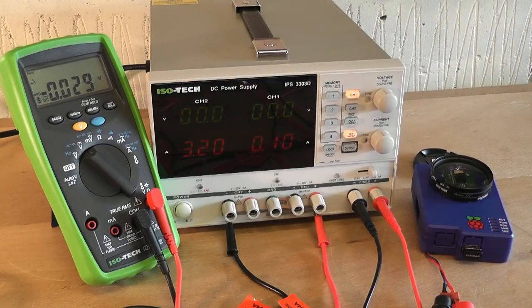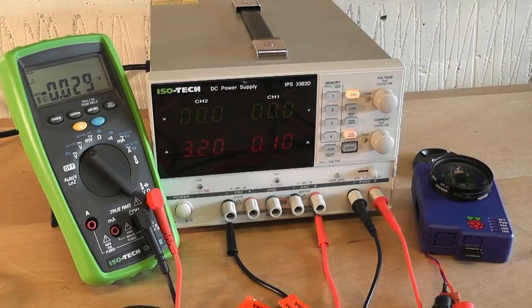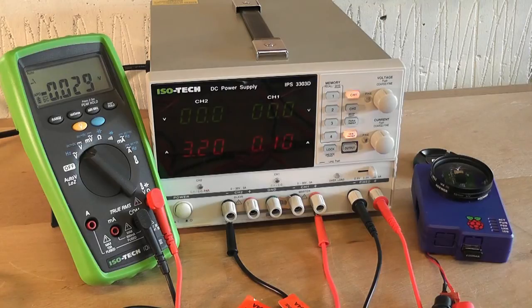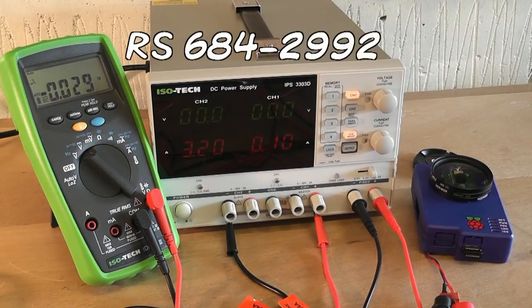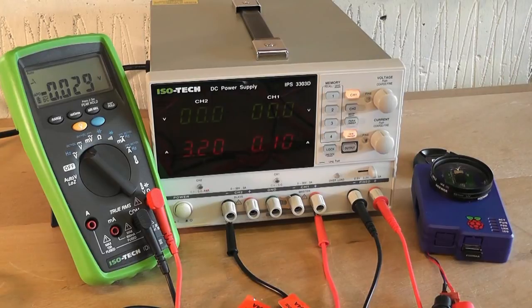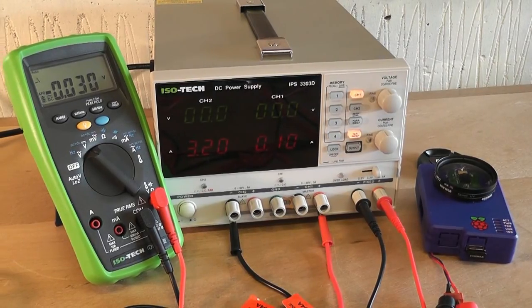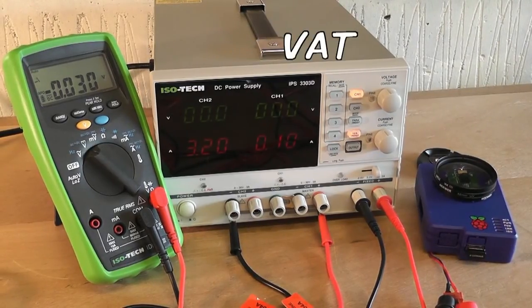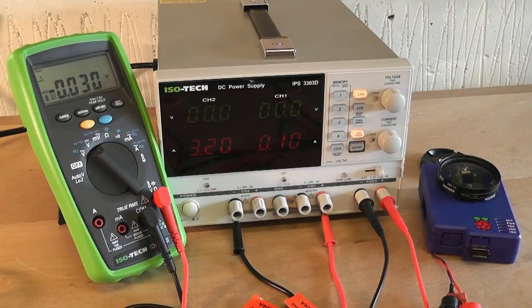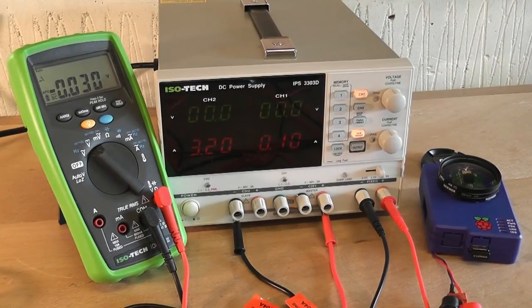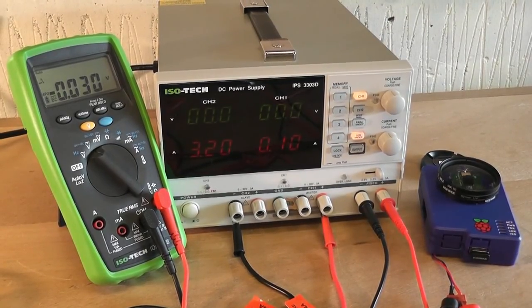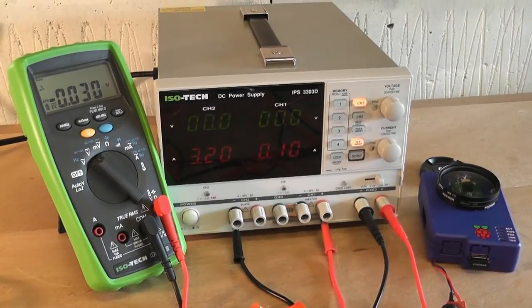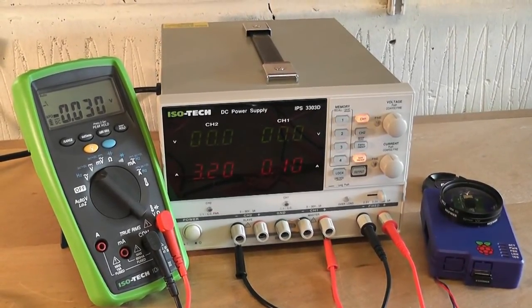So that was a review and tutorial of the Isotec IPS 3303D Benchtop DC Power supply. The RS part number 684-2992 should you wish to order one. There's something in the region of 300 pounds. That might make your eyes water if you're a hobbyist. But they are aimed at professional electronic engineers. And they do a simple job. But they do it really well. And I'm absolutely delighted with mine.